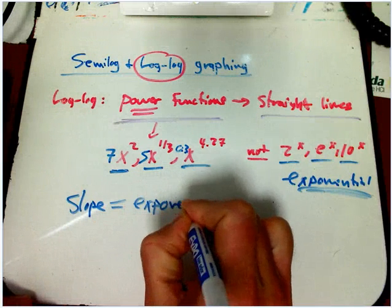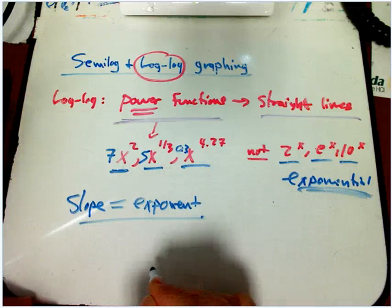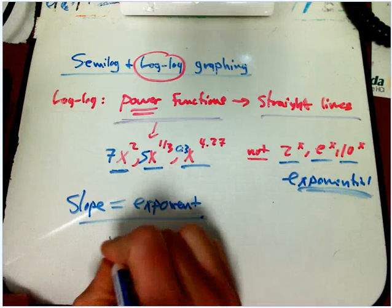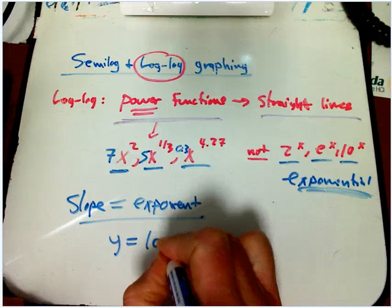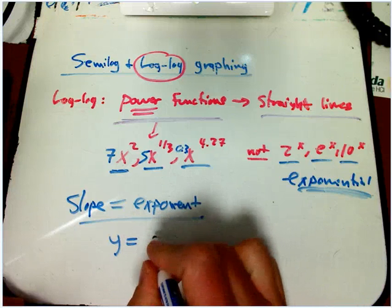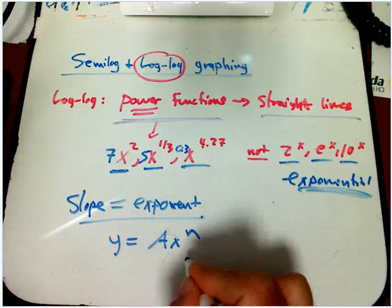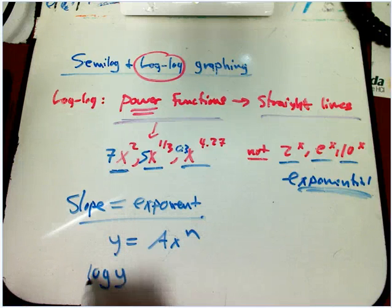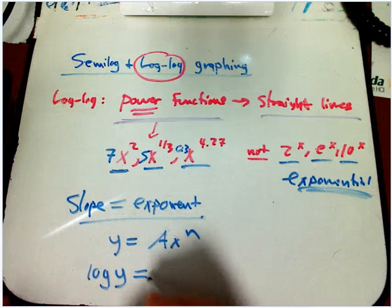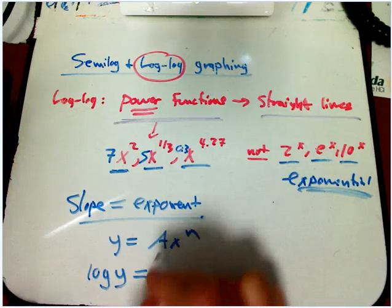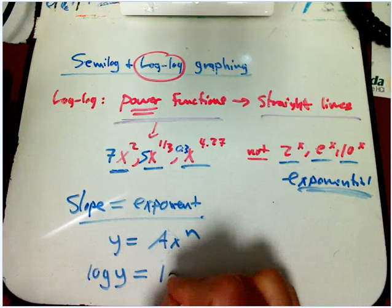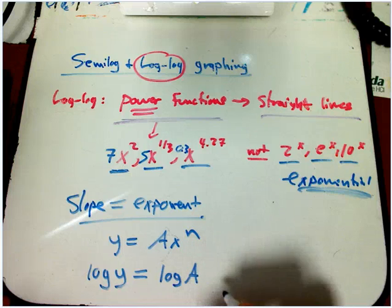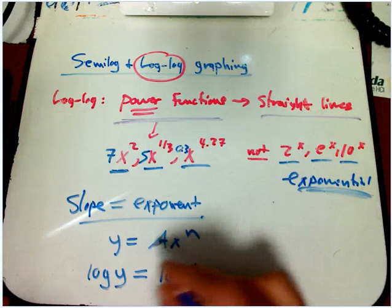Let me just show you the algebra. If you have y equals ax to the n, what we're really graphing is the height of the vertical scale is just log y, the horizontal scale is just log x. I'm going to take the log of both sides of this and use a couple rules of logs: log of the product is sum of the logs, and log of x to the n is n log x.